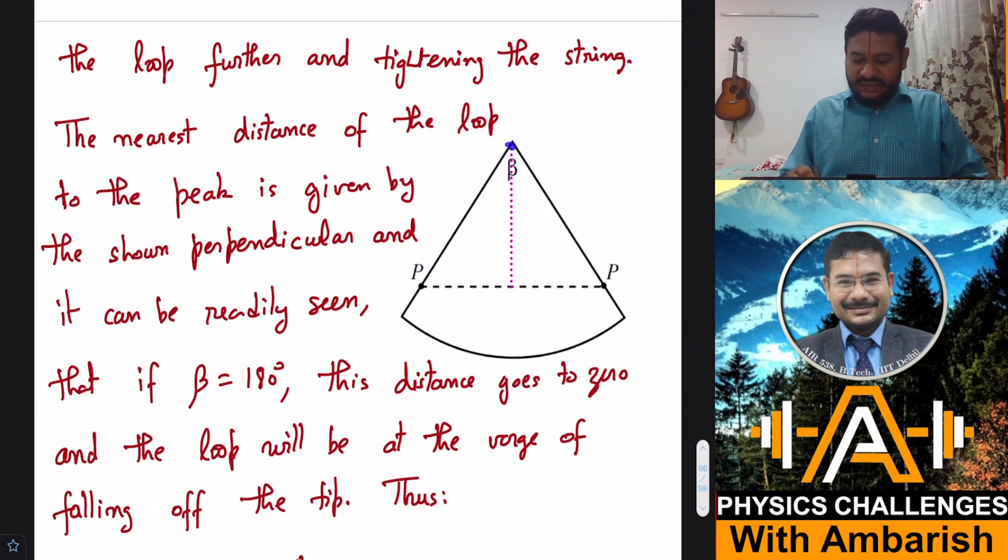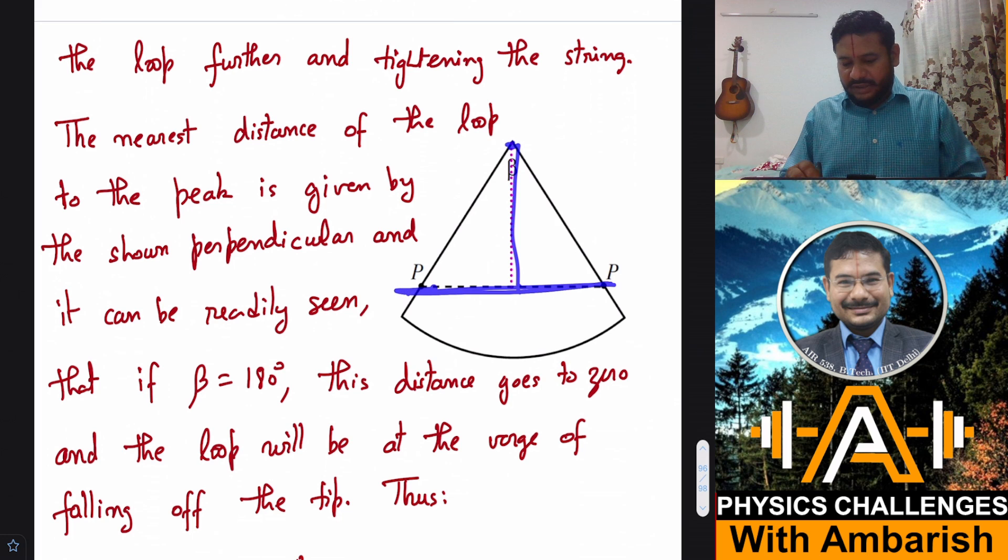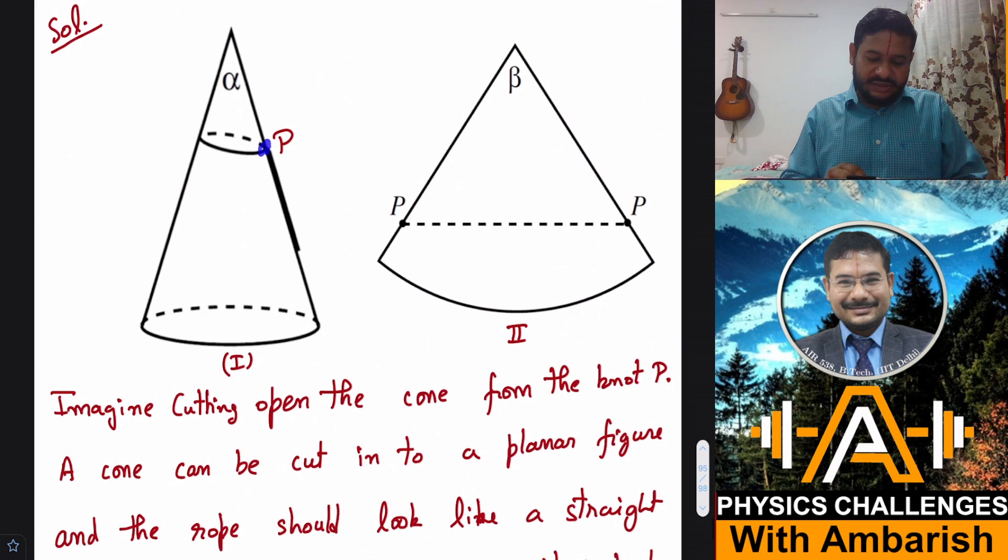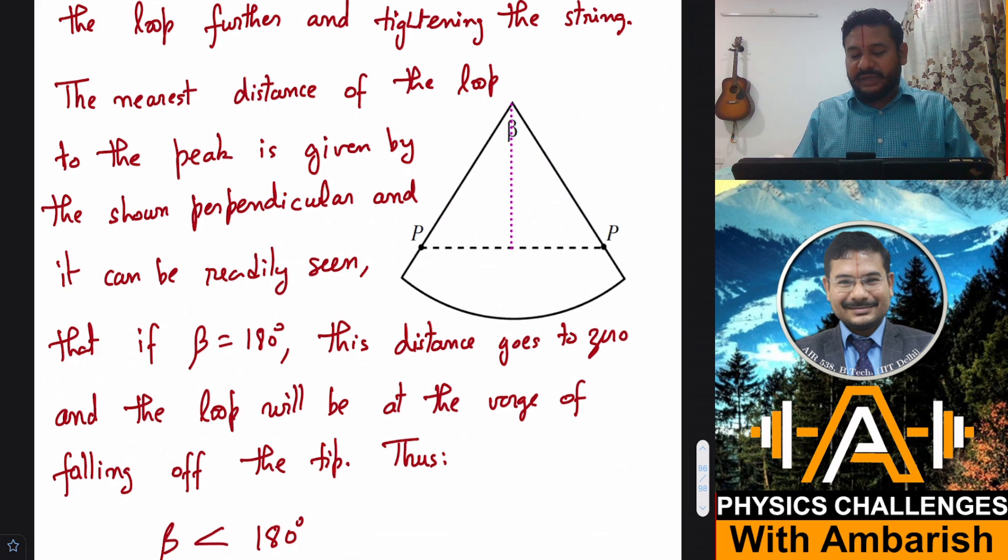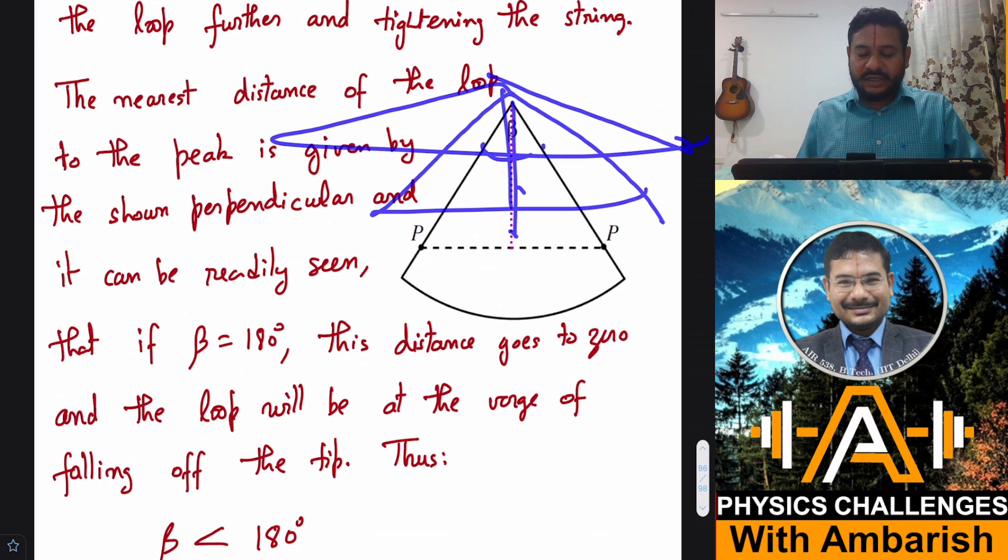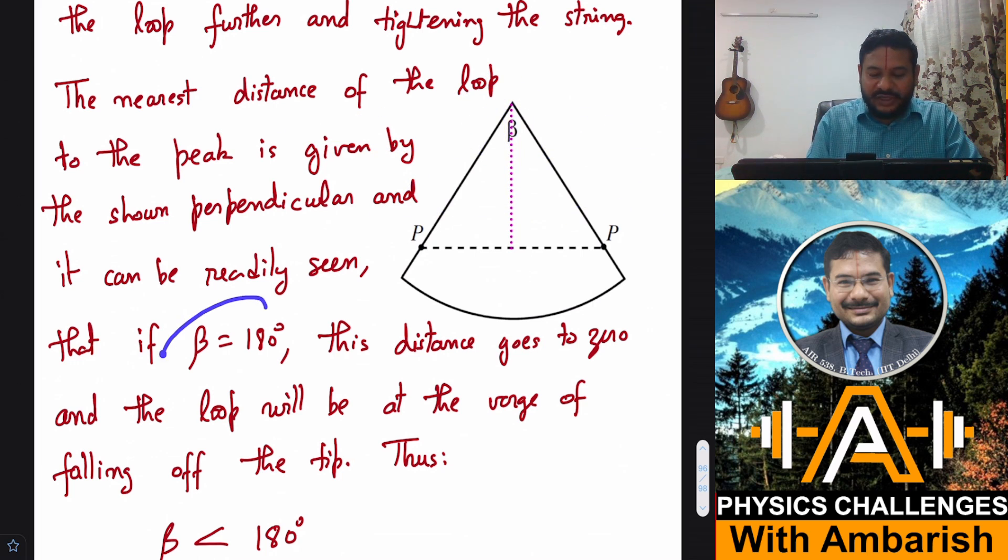Now, what about the nearest distance of this rope from the peak? In fact, the nearest distance, shortest distance will be just opposite to the knot. You see, this is the lowest point and this is the highest point. So this will be just opposite and this distance can be found by drawing perpendicular, right? And you can see clearly that if beta keeps on increasing, then this perpendicular will keep on reducing, right? This perpendicular keep on reducing.